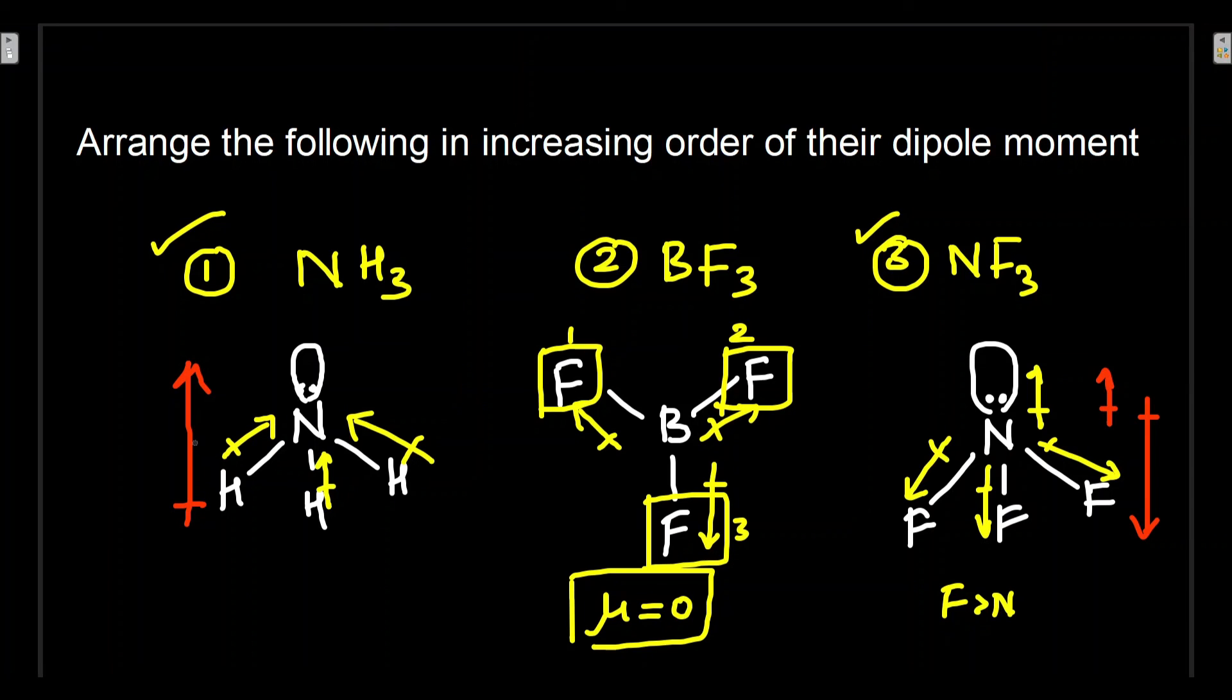Because of this, you can say the resultant dipole moment in NH3 is in one direction—it will be having higher dipole moment value. Whereas resultant dipole moment in NF3 will be less than NH3 because of the opposite direction dipole moment, so it has lower μ value.